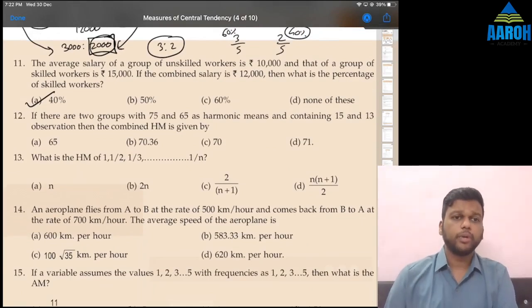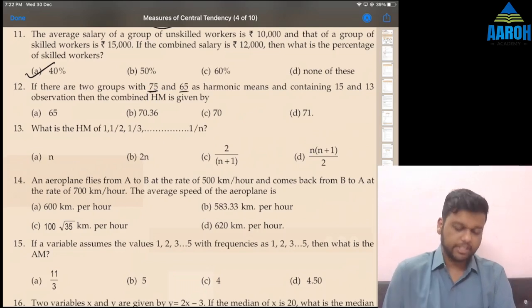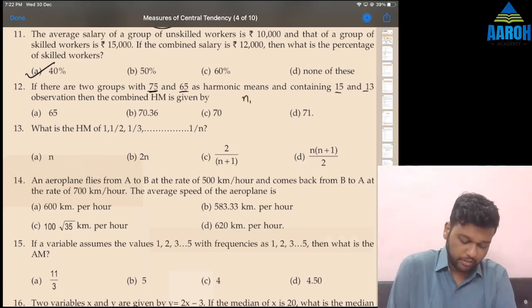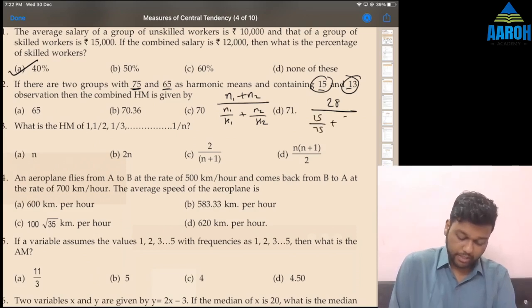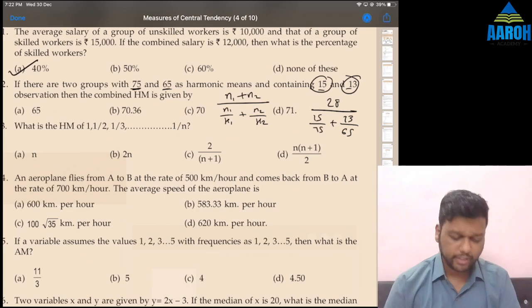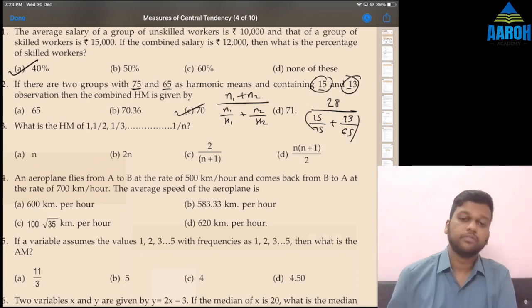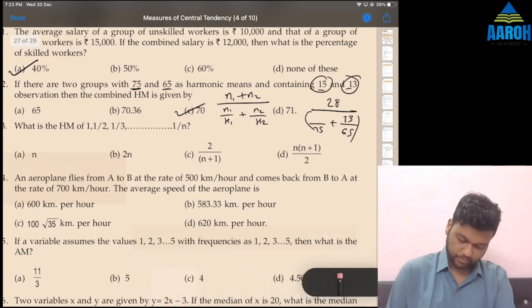If there are 2 groups with 75 and 65 as harmonic means and containing 15 and 13 observations, then combined HM is given by. Combined HM has a similar formula: N1 plus N2 upon N1 by H1 plus N2 by H2. N1 plus N2 is 28 upon N1 by 75 plus N2 by 65. On calculator: 15 by 75 M plus, 13 by 65 M plus gives us 0.4 as denominator. 28 by 0.4 is 70. 70 will be the combined HM.